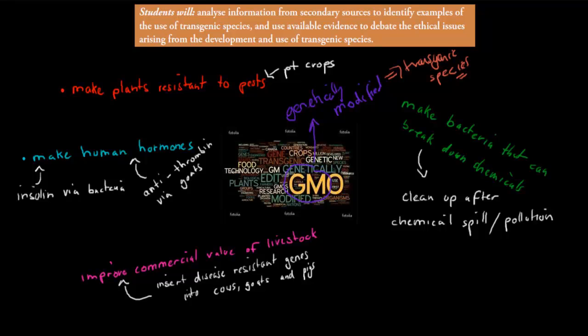For example, they make plants resistant to pests. BT crops, which we mentioned in the last video, these can be used to make plants resistant to pests, which means we have to use less pesticides and the actual plants themselves will be killed less often by pests, or eaten by pests less often. And that was one use of transgenic species.